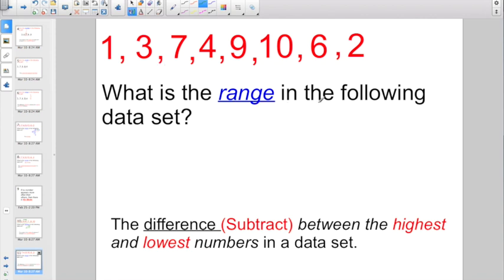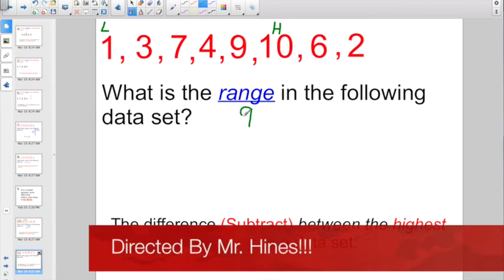And what is the range? Remember, that is the difference between the highest or greatest value in your data set and the lowest or least in your data set. So, 10 minus 1, welcome back to third grade. 10 minus 1 is 9. So, you have a range of 9 in this data set.